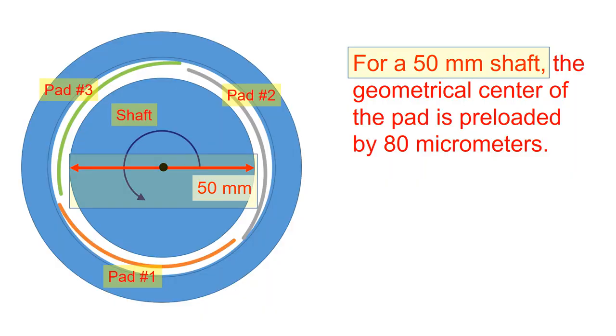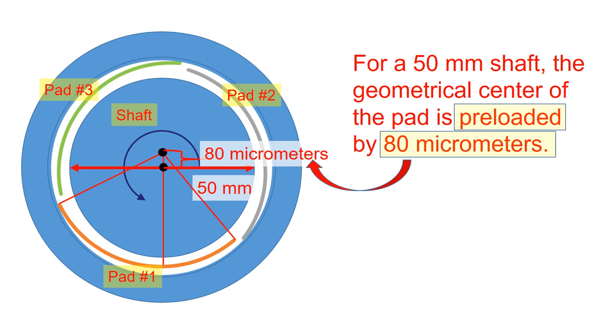For a 50 millimeter shaft, the geometrical center of the pad is typically preloaded by 80 micrometers.